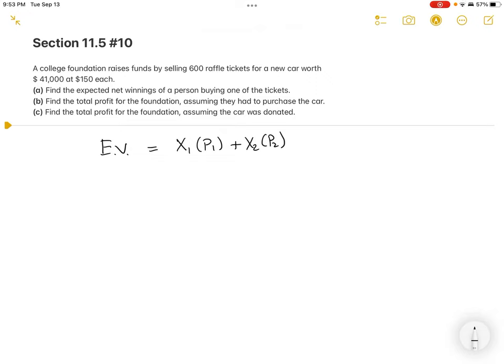When you go to your number 10, it will be similar to this but maybe not exactly the same. A college foundation raises funds by selling 600 raffle tickets at $150 each for a new car worth $41,000. Find the expected net winnings of a person buying one of the tickets.